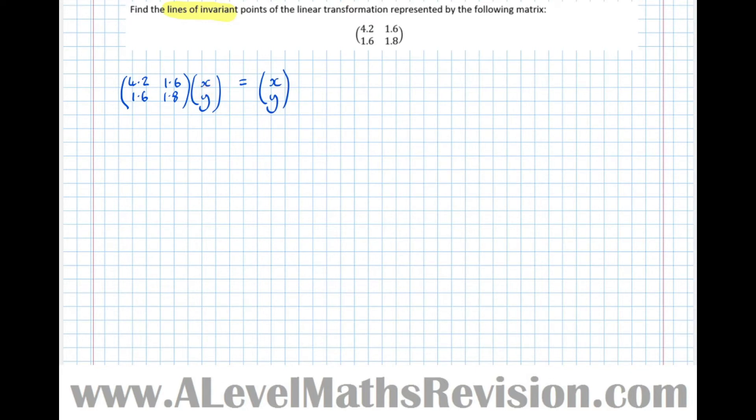Let's multiply this matrix out. So we'll get 4.2x plus 1.6y equals x, and the bottom one, 1.6x plus 1.8y equals y. We've made two simultaneous equations, one for the top component, one for the bottom component.